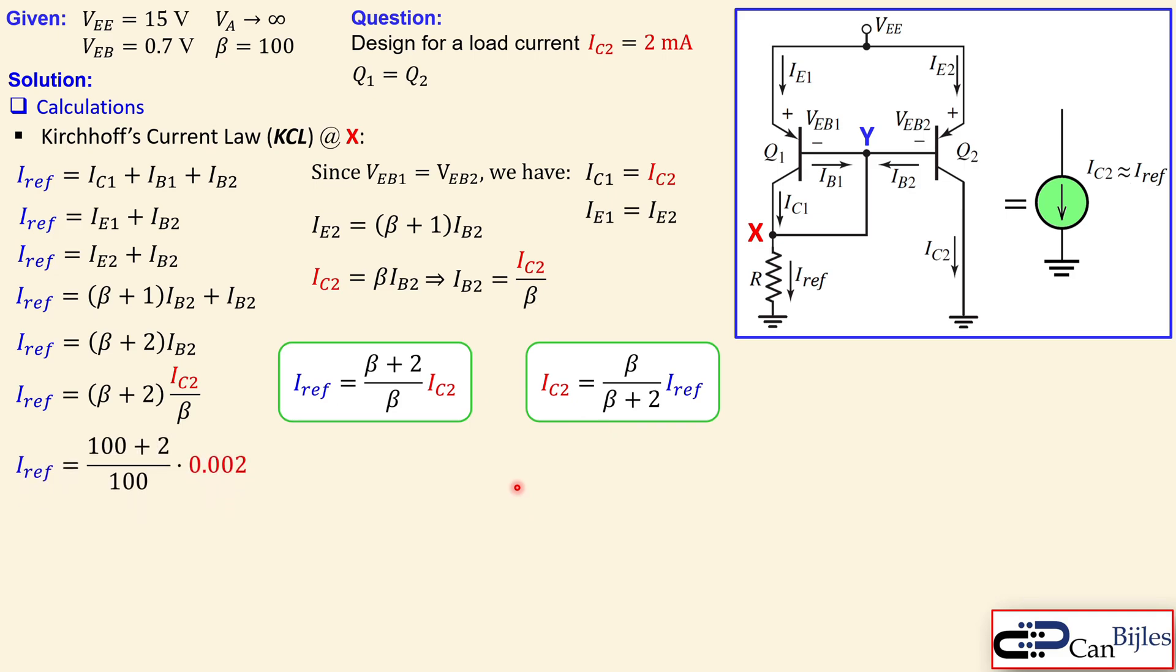Now in this case, we need to have 2 milliamps IC2. So we can use this formula. And you just substitute the 100 for beta. And you have now calculated 2.04 milliamps. That's the required reference current.